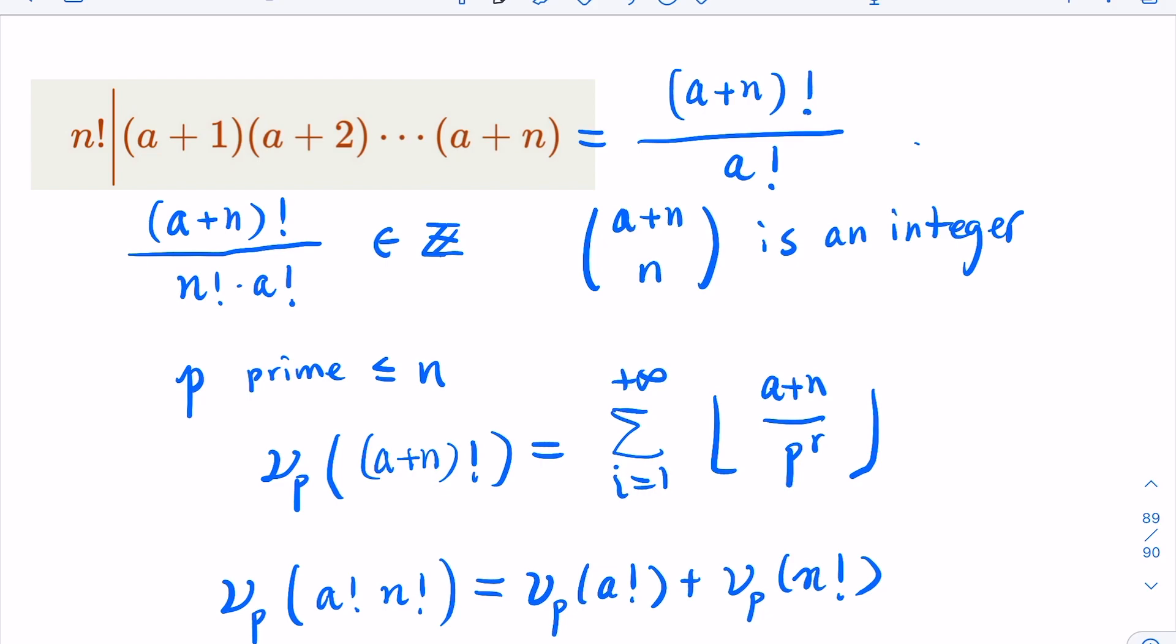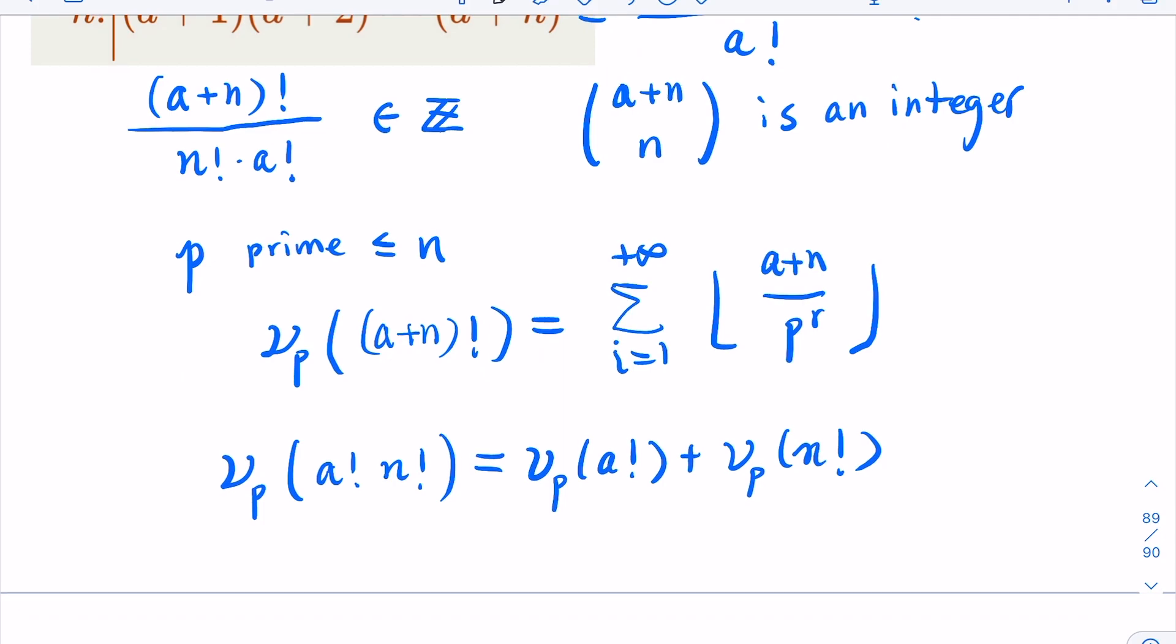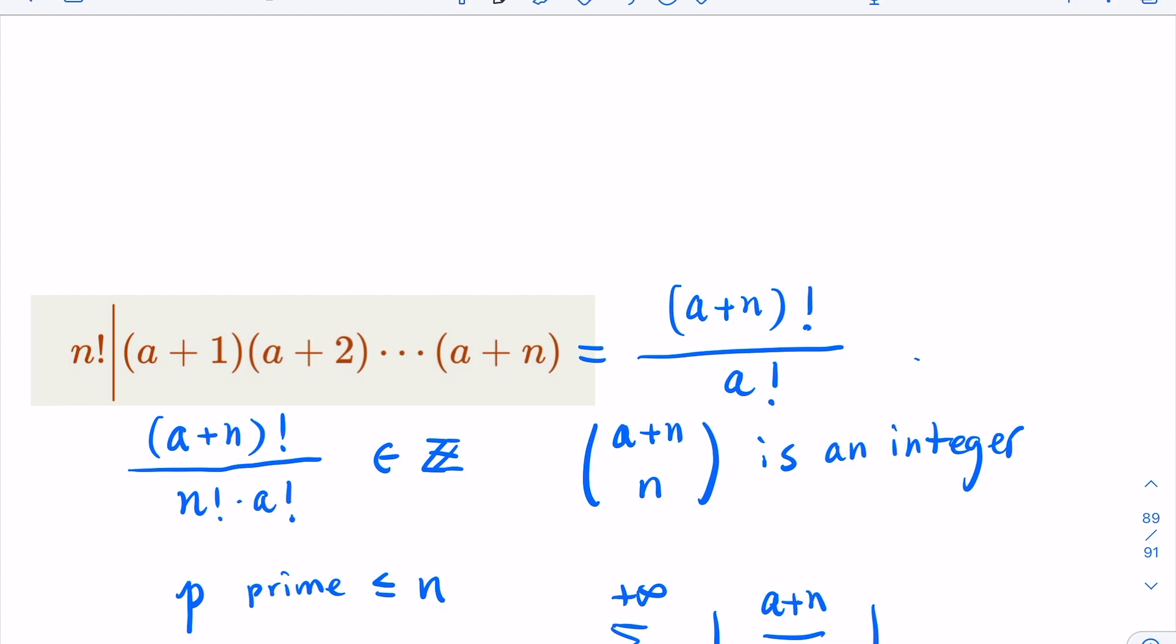So here, notice that this is going to be the floor function here, sigma i from 1 to infinity. That's going to be the summation of floor of a over p^i plus floor of n over p^i. Now, here we're going to use an important inequality regarding the floor function. So we claim that for positive numbers x and y, we have floor(x+y) is greater than or equal to floor(x) plus floor(y).